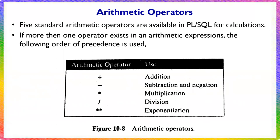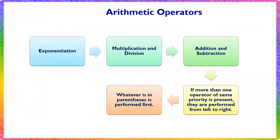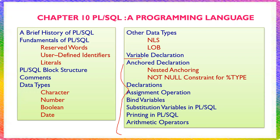The last topic is arithmetic operators. You are already familiar with arithmetic operators available in different languages: addition, subtraction, multiplication, division, and exponentiation. When more than one operator appears in an expression, operator precedence applies. First is exponentiation, then multiplication and division, then addition and subtraction. Operators of equal precedence are evaluated from left to right.